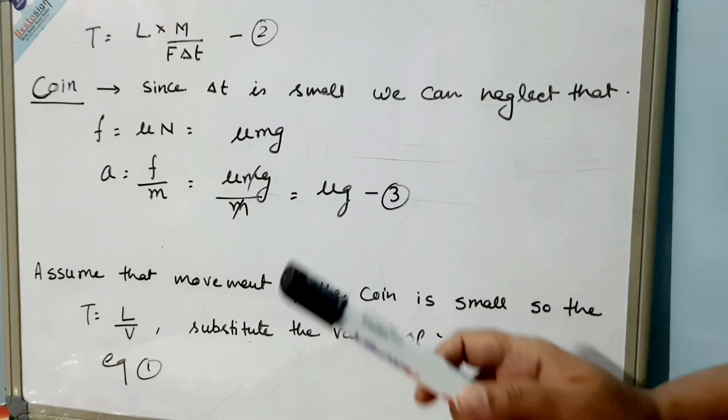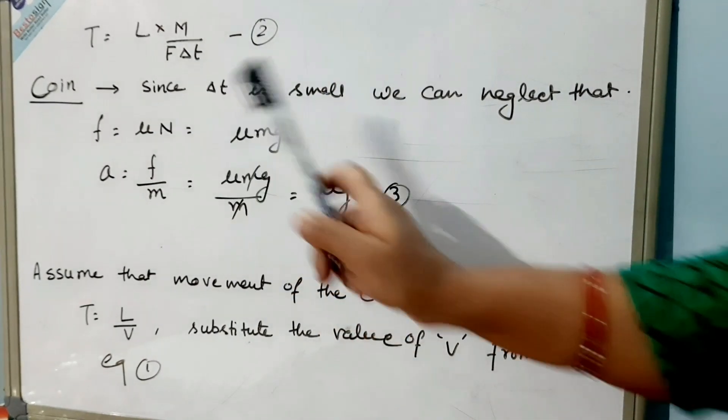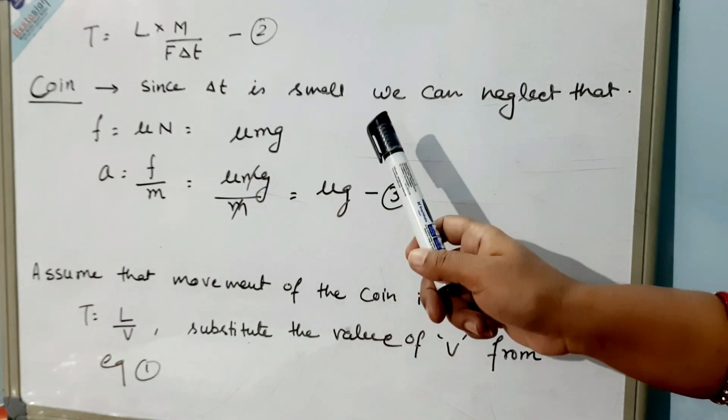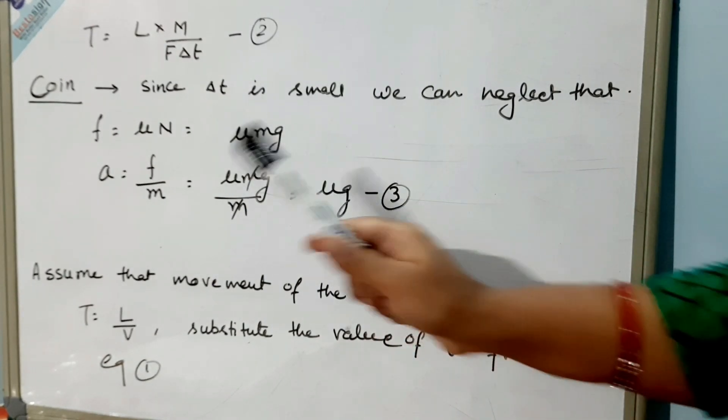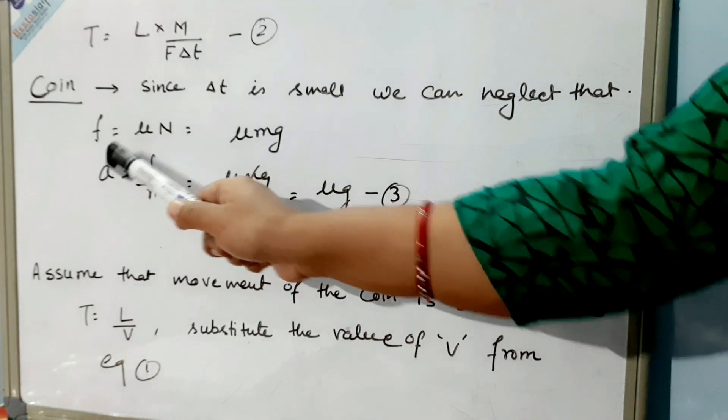Since Δt is small, we can neglect it. So the next equation will be f = μN, where N is the normal reaction force, so it will be μmg.